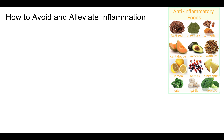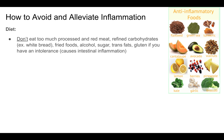So how do we avoid and alleviate inflammation? With regard to diet, don't eat too much processed or red meat, refined carbohydrates such as white bread, fried foods, alcohol, sugar, trans fats, or gluten if you have an intolerance — as this causes intestinal inflammation.